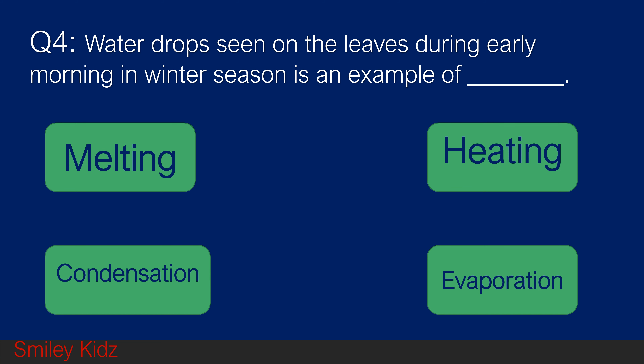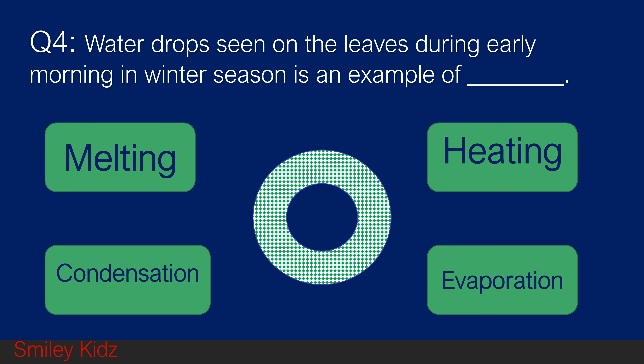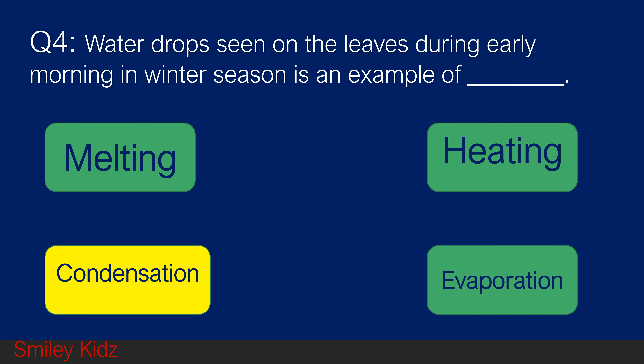Question number 4. Water drops seen on the leaves during early morning in winter is an example of: option A melting, option B heating, option C condensation, and option D evaporation. And your time is up. The right answer is condensation. Water drops seen on the leaves during early morning in winter season is an example of condensation.